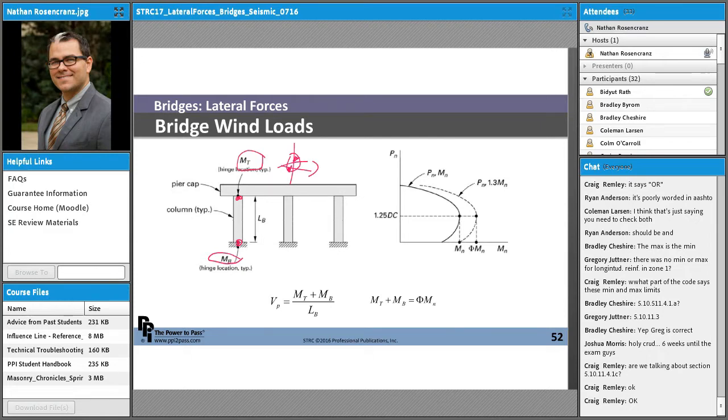So we have that lateral force at the superstructure level which is then going to generate additional axial loads in these members but it will also generate some bending moments in these members as well.